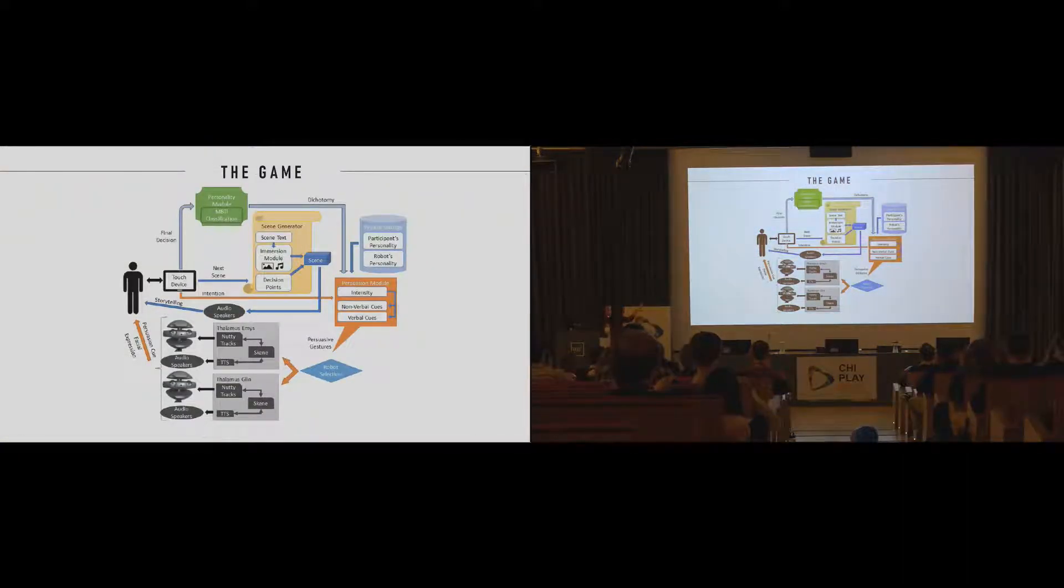This is the architecture of the game. Basically, the game had three essential modules. The scene generator which would define the next scene that would appear in the game based on the player's previous decisions. We had the personality module that would define the personality of the robot and the next robot to intervene based on the system settings which included the participant's personality and the robot's personality or level of assertiveness.